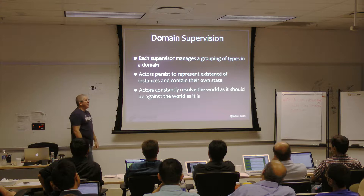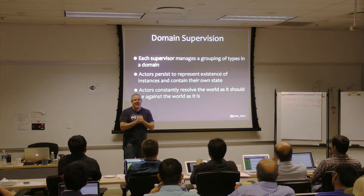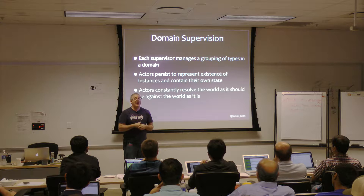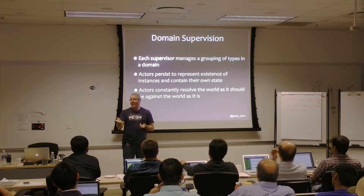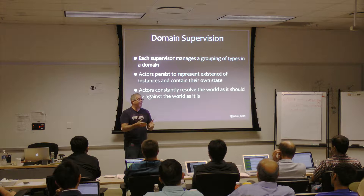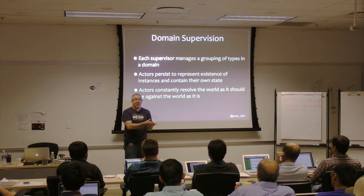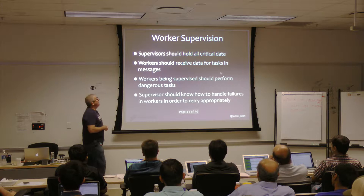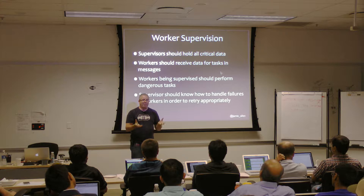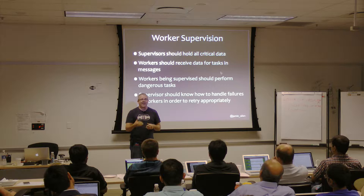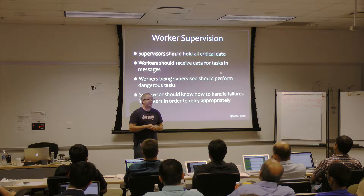There are two kinds of actor systems. One is a live cache — using actors to hold state and represent real data live inside the JVM, such as all customers and all their accounts. Worker supervision is different: worker actors should not really have state. State is passed to them in messages, they apply some behavior to that state, then send a response on to somewhere else.